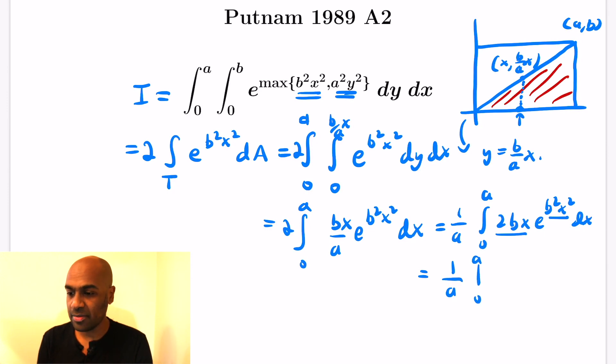So we get 1 over a times the evaluation from 0 to a of e to the b squared x squared, but then we have this extra factor of b when we actually differentiate the function e to the b squared x squared, so we need to make sure to have a 1 over b over here. If we do the evaluation, we get a simplified form of 1 over ab times the quantity e to the a squared b squared minus 1.